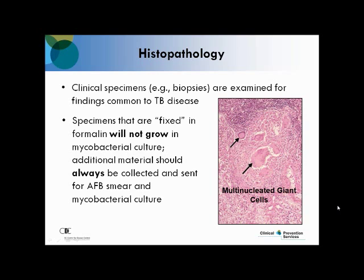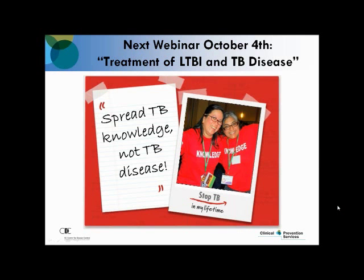Biopsies or clinical specimens can be examined for findings common to TB disease. However, if a specimen is fixed in formalin, it will not grow in a culture medium, so we encourage additional material to be collected and sent for AFB smear and mycobacterial culture when possible. The next webinar will be October 4th, talking about treating latent TB infection and active TB disease. We hope you now know the difference between latent TB infection and active TB disease, and that TST, IGRA, and x-rays are your weapons against TB — and sputum, we love it.